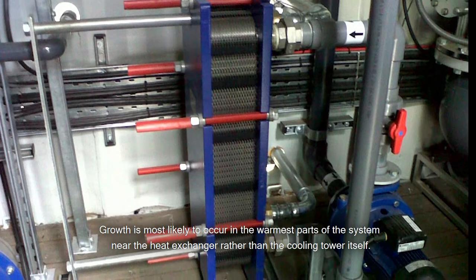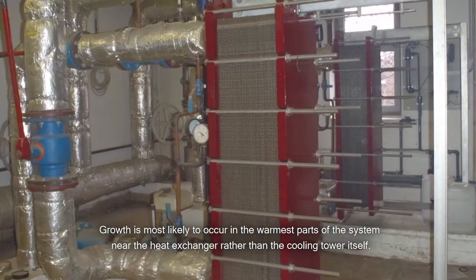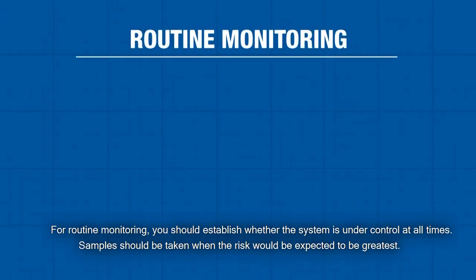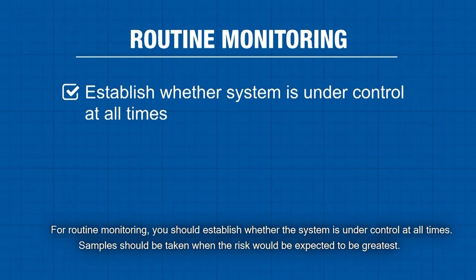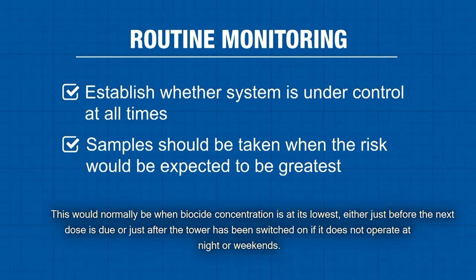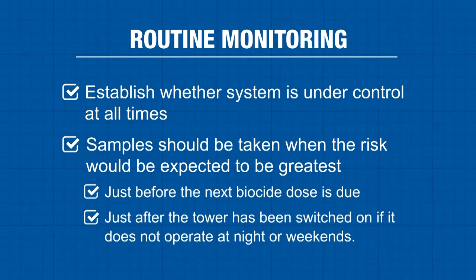Growth is most likely to occur in the warmest parts of the system near the heat exchanger rather than the cooling tower itself. For routine monitoring you should establish whether the system is under control at all times. Samples should be taken when the risk would be expected to be greatest — normally when biocide concentration is at its lowest, either just before the next dose is due or just after the tower has been switched on if it doesn't operate at night or weekends.